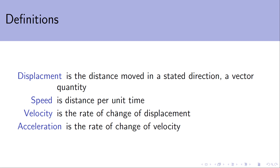Velocity is the rate of change of displacement — so how quickly our displacement, how quickly our position, is changing. And then acceleration is the rate of change of velocity — how quickly our velocity is changing. Both velocity and acceleration are acting in a direction and have a magnitude, so they are also vectors.